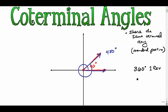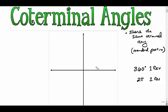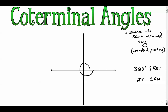In radian measure, two pi radians gives you one revolution, getting you all the way around. From the start all the way back is 360 degrees, or equivalently 2π radians. Going negative gives you negative 2π or negative 360 degrees.